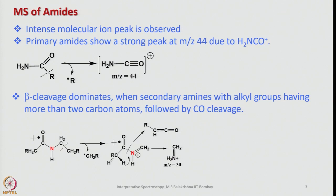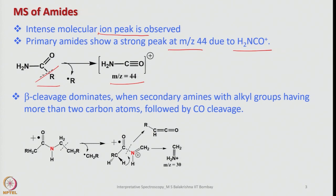Let's look into mass spectra of amides. In the case of amides we do get intense molecular ion peaks. Primary amides show a strong peak at m/z 44 due to the H₂NCO cation, and this is how the fragmentation happens initially. This bond cleaves and we get a species of mass m/z = 44. Beta cleavage is also quite possible and it dominates when considering secondary amides having more than 3 carbon-carbon bonds in the R group, leading to carbon monoxide cleavage to form a species that becomes the base peak at m/z = 30.